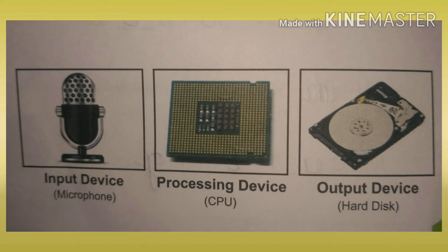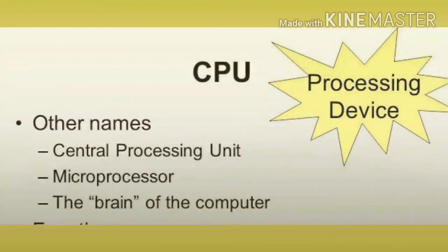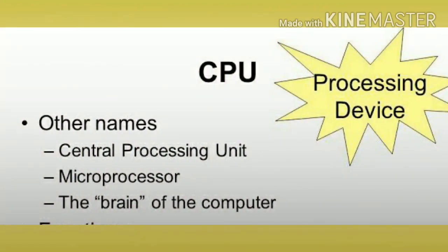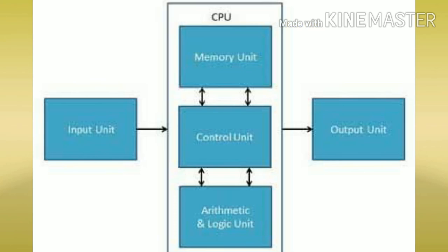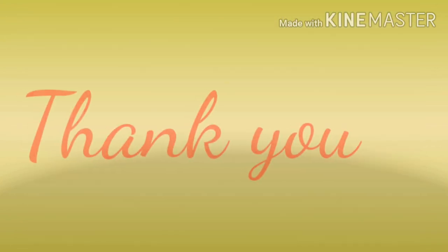So children, which are the different names of CPU? CPU is known as the brain of the computer. It is also known as Central Processing Unit, or processing device, and CPU is also known as microprocessor. In the next class, we will learn the components of CPU. Thank you, children.